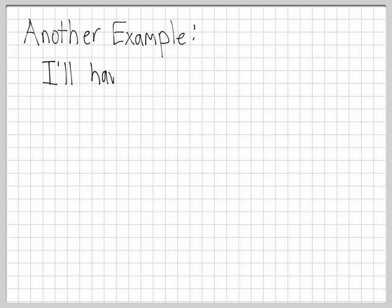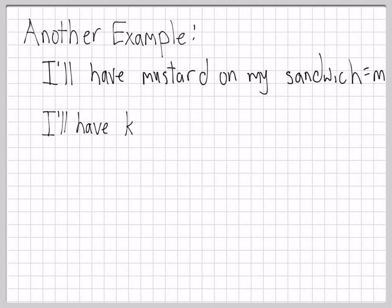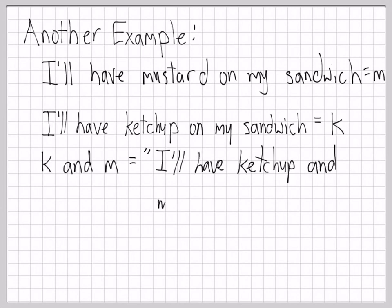Here's another example. If the variable m stands for the statement I'll have mustard on my sandwich, and the variable k stands for I'll have ketchup on my sandwich, then the more complex statement k and m is I'll have ketchup and mustard on my sandwich. Notice that in the logical version we have the word and and in the more complex sentence we have the word and.